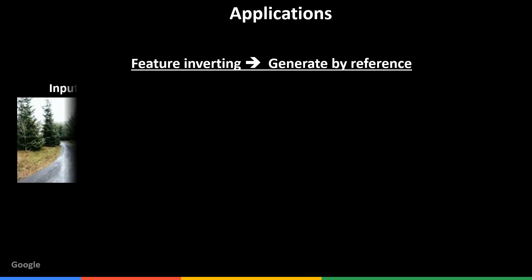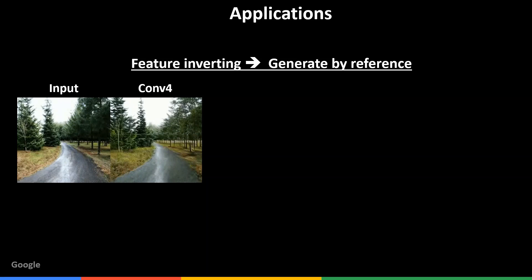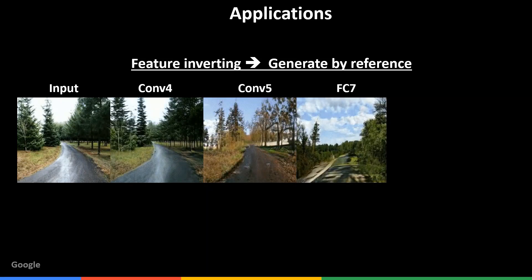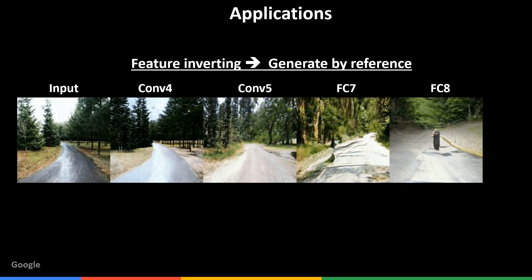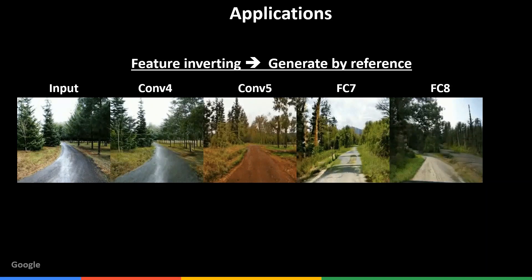Semantic pyramid gives rise to a wide variety of applications. The basic application is using feature inversion to generate by reference with a controllable amount of diversity, depending on the chosen layer. Note how the deepest layer even adds a motorcycle.